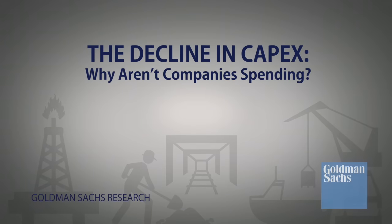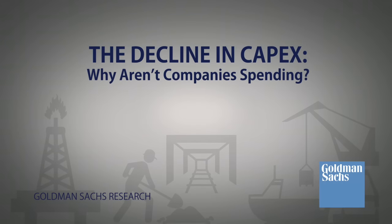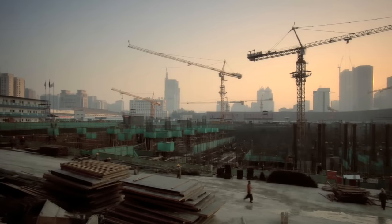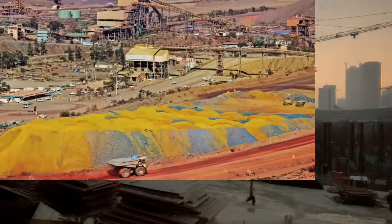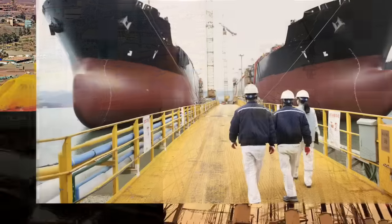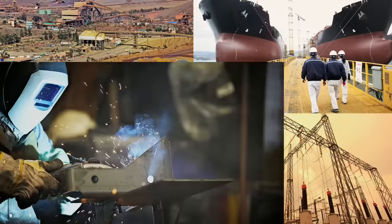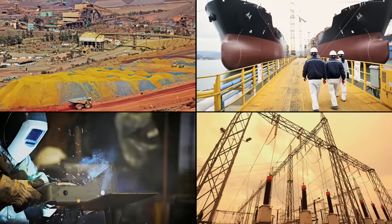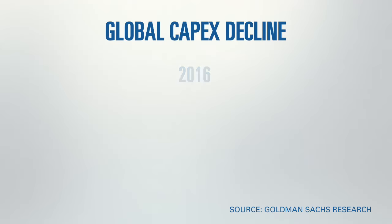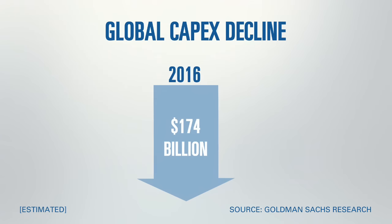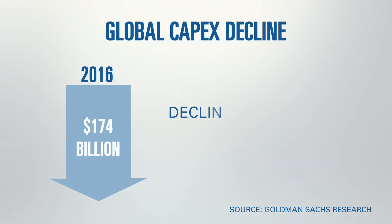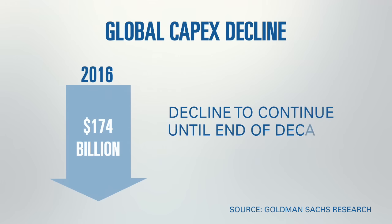The reason why it is so important to talk about capital expenditure at this point is because we're coming out of 15 years of overinvestment in several of the major industries in the global economy, particularly in emerging markets — in industries like resources, utilities, marine, and general industrial manufacturing. As we look out to 2016, we see a drop in global capital expenditure by about 5%, and we expect this decline in capex to continue until the end of the decade.